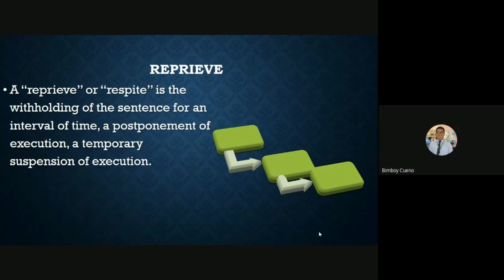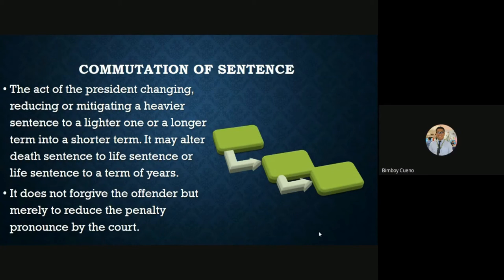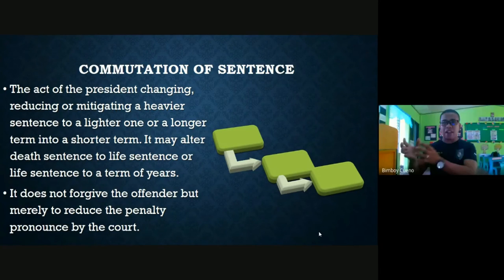Commutation of sentence is the act of the President changing, reducing, or mitigating a heavier sentence to a lighter one, or a longer term into a shorter term. It may alter a death sentence to life imprisonment, or life imprisonment to a term of years. It does not forgive the offender but merely reduces the penalty pronounced by the court — for example, from death penalty commuted to life imprisonment, or from life imprisonment commuted to Reclusion Temporal.